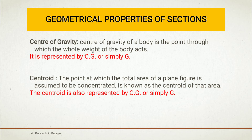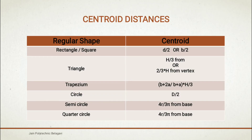Centroid is also represented by CG or capital G, same as center of gravity. For a rectangle or square with dimensions B × D, the centroid is located at D/2 or B/2 from the base. For a triangle with height H, the centroid distance from the base is H/3, or equivalently two-thirds of the height from the top vertex.